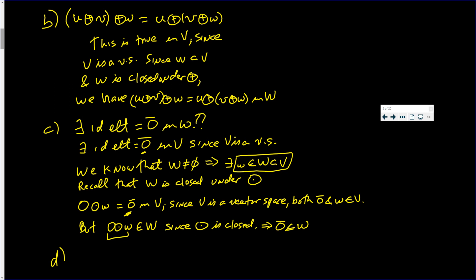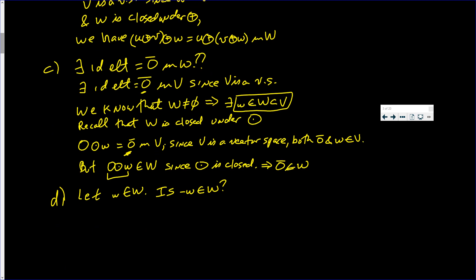Letter D of the definition says there is an additive inverse. So let w be in W. Is there an inverse? Of course: (-1)⊙w equals negative w. And this is in W since scalar multiplication is closed in W. So we have the additive inverses established.